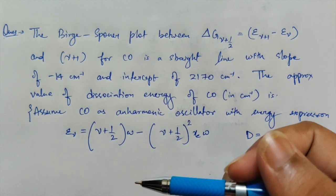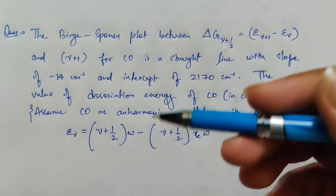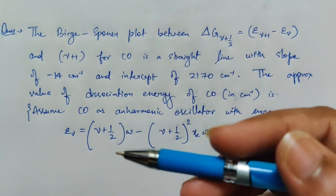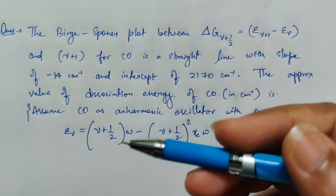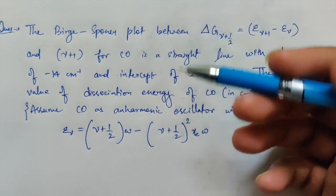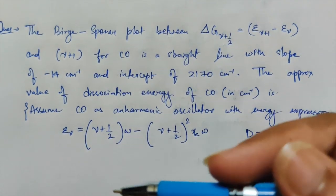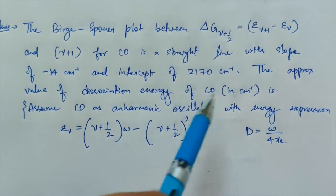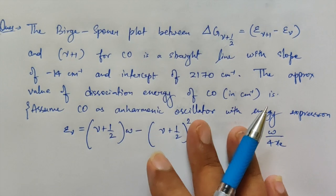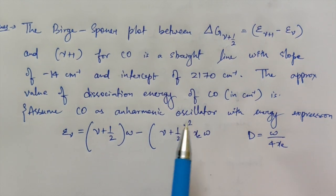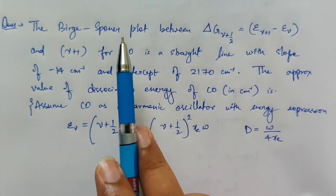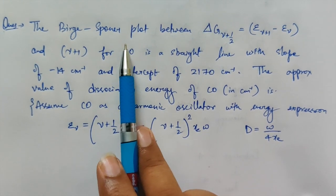The unbound state tells you how much energy you require to make a transition from the ground state to the unbound or maximum state. Unbound state means you are dissociating the molecule. This is the technical explanation of the Birge-Sponer plot — I'll be making a separate video on it later, but right now let's discuss this question.